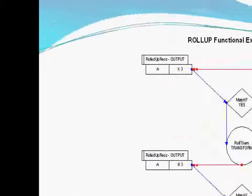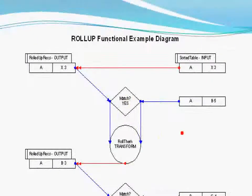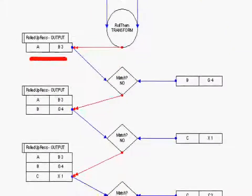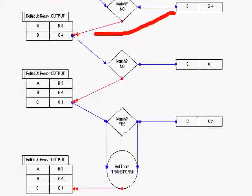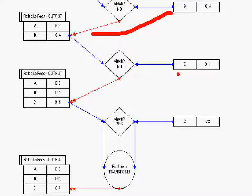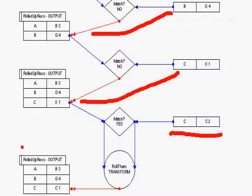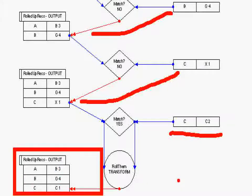Here we see a graphical representation of what we just did. The AX3 record is compared to AB5 — they match, so they go to the transform to produce the AB3 record. The AB3 record does not match BG4, so it goes directly into the result set. BG4 does not match CC1, so it goes directly into the result set. The CC1 record does match CC2, so they go to the transform to produce the CC1 record.